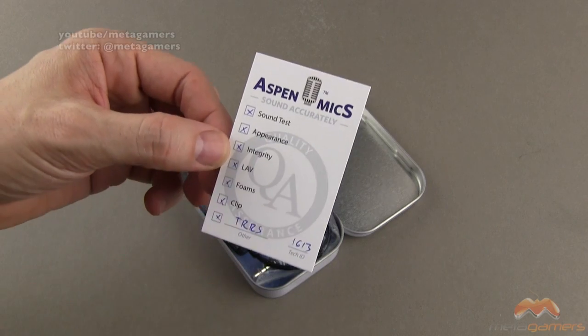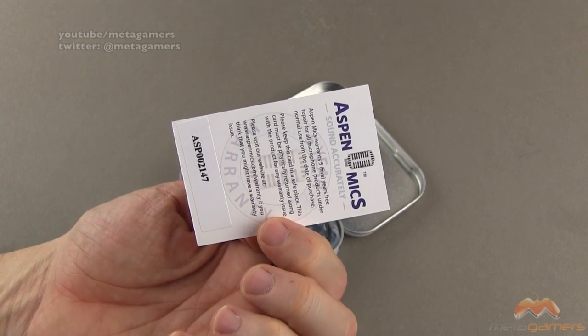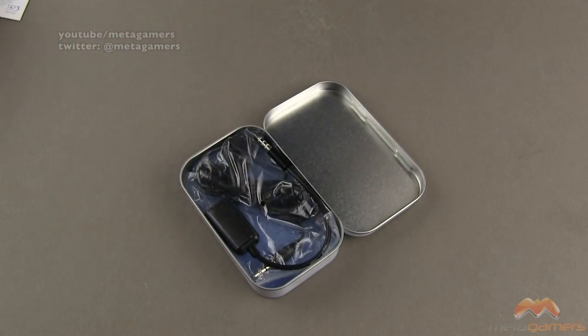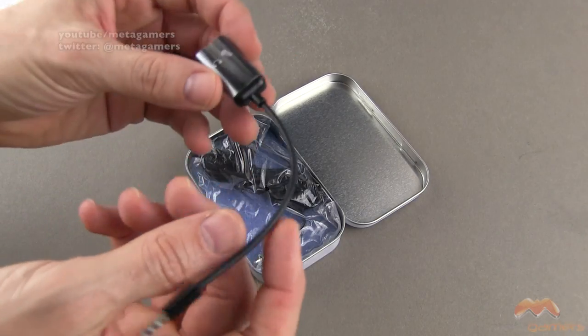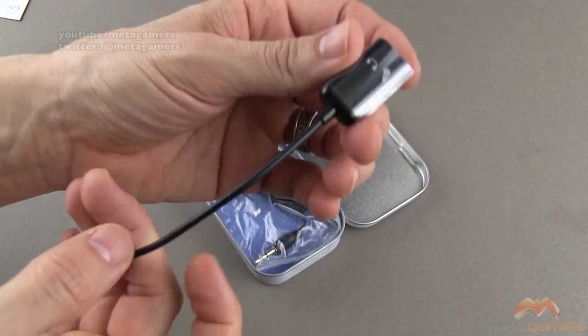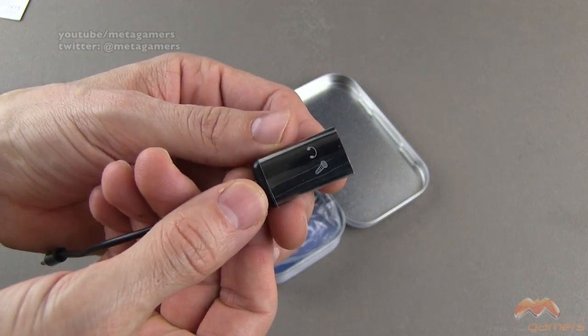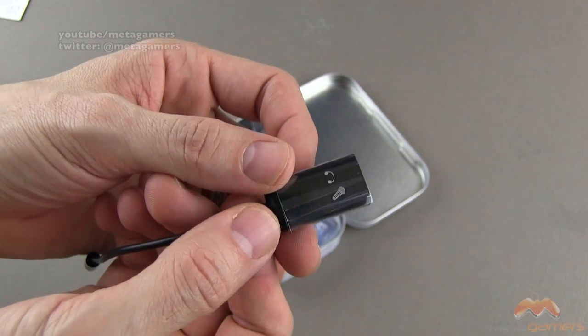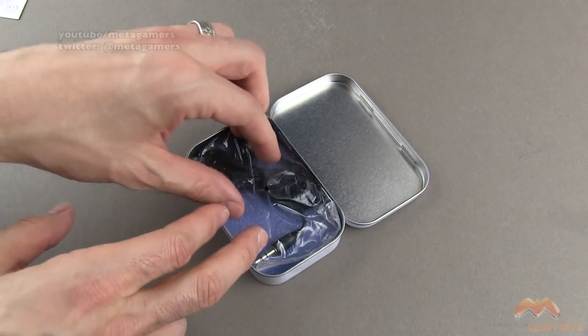You see the insert card that it comes with and the travel tin that it also comes with. I like this model because it includes a breakaway cable where you can input not only the microphone on one side, but headphones on the other side so you can monitor what you're recording.